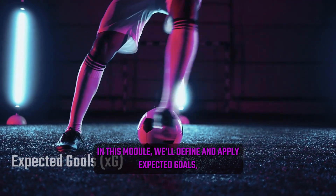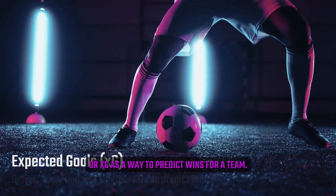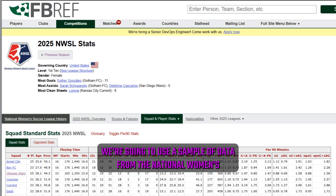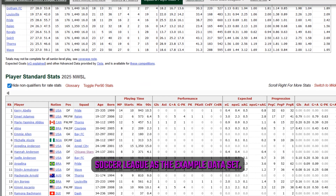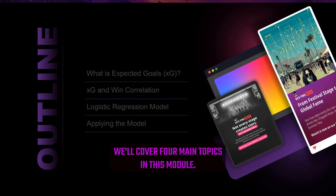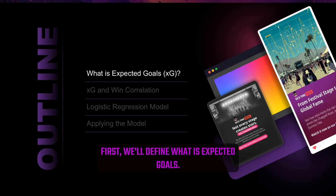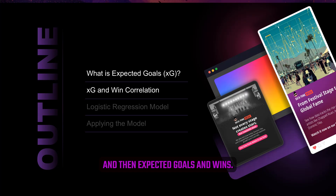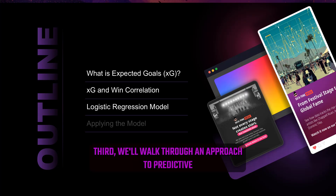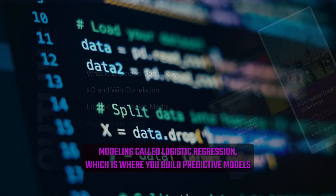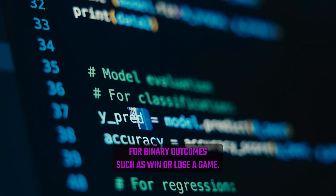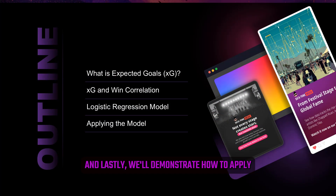In this module, we'll define and apply expected goals, or XG, as a way to predict wins for a team. We're going to use a sample of data from the National Women's Soccer League as the example dataset. We'll cover four main topics: first, we'll define what expected goals is; second, we'll explore the correlation between expected goals and goals, and then expected goals and wins; third, we'll walk through logistic regression, a predictive modeling approach for binary outcomes such as win or lose; and lastly, we'll demonstrate how to apply the model.